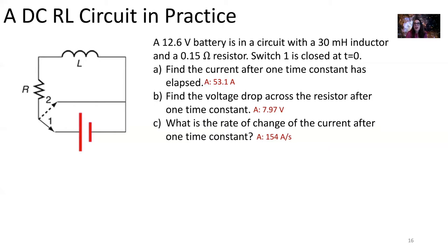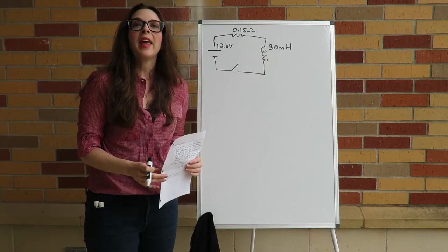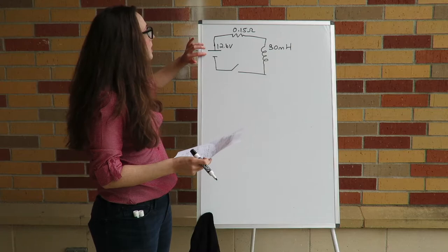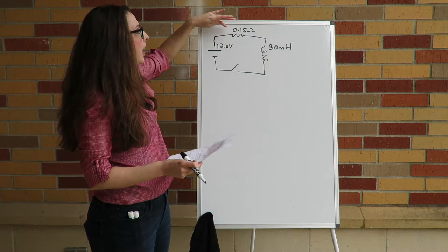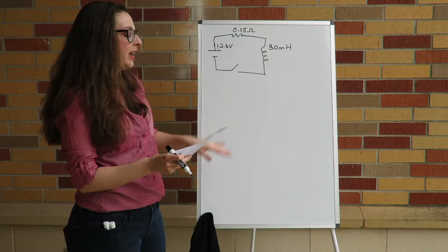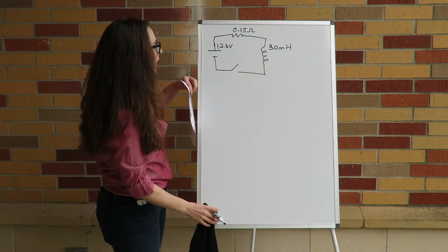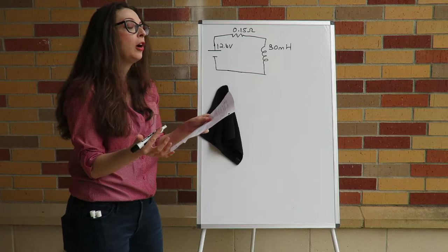We are going to practice with a direct current RL circuit. We have a 12.6 volt battery in circuit with a 30 millihenry inductor and a 0.15 ohm resistor, and we close the switch at time t equals zero. We're going to find the current after one time constant has elapsed, the voltage across the resistor after that one time constant, and the rate of change of current after one time constant.